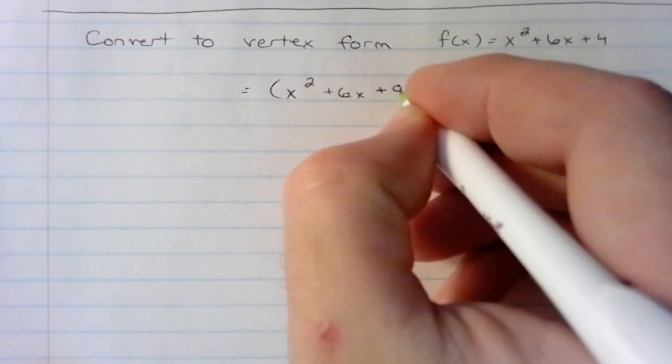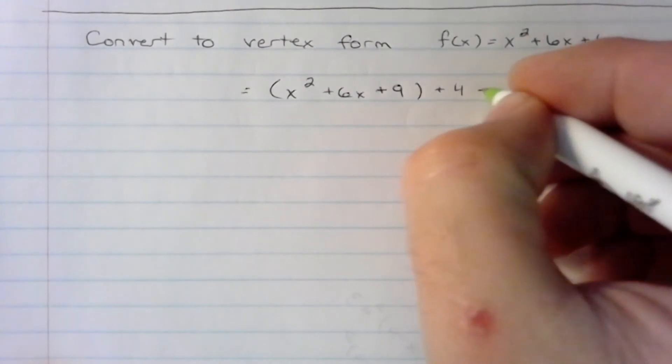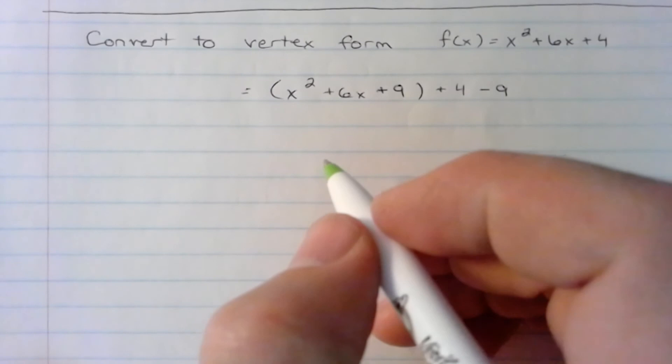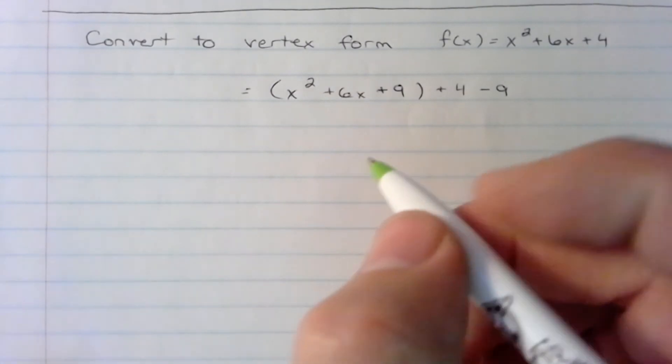Now, we must subtract 9 here on the outside to keep the whole equation balanced, so it is, in effect, adding 0. We can then turn...